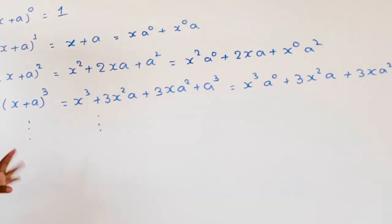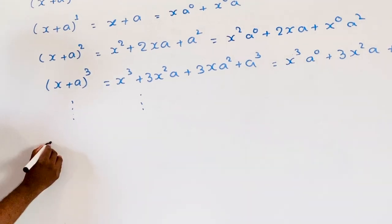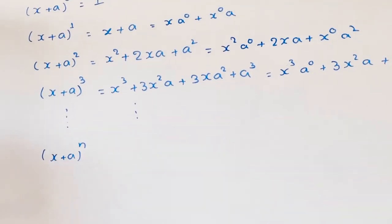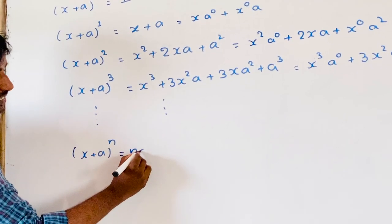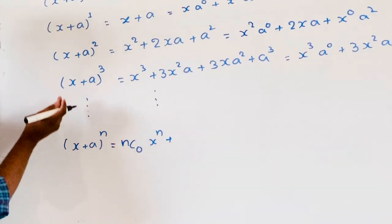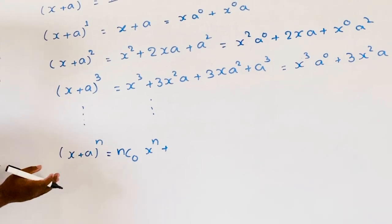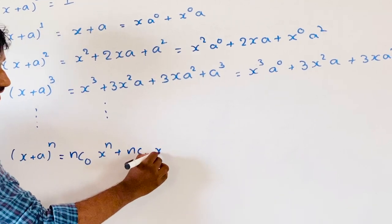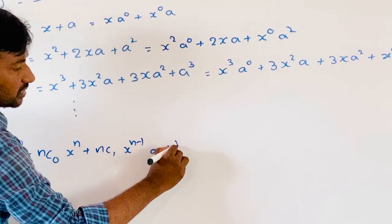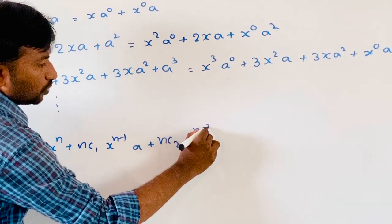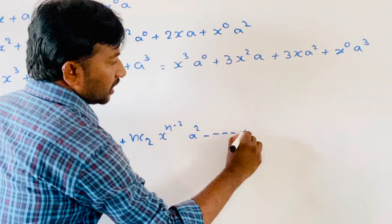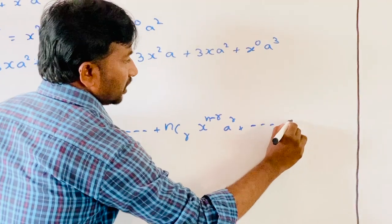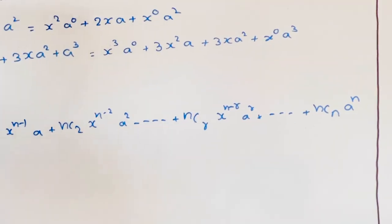Now, it is very difficult to find what is the general form of (x+a) whole power n, where n is any natural number. Based on the examples, I will write (x+a) whole power n as: nC0 x power n plus nC1 x power (n−1) into a plus nC2 x power (n−2) into a square plus and so on, nCr x power (n−r) into a power r plus and so on, nCn x power 0 into a power n.